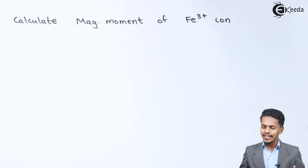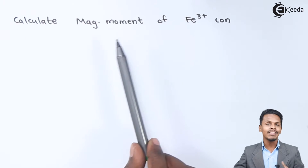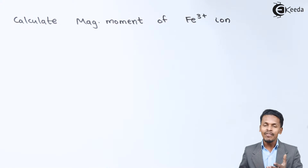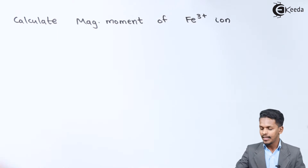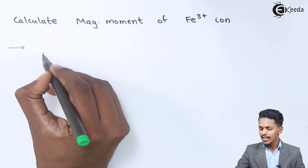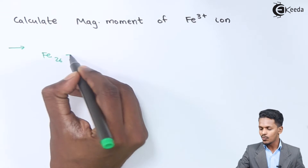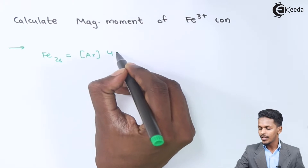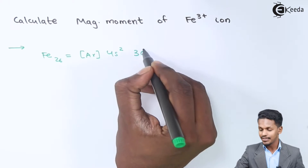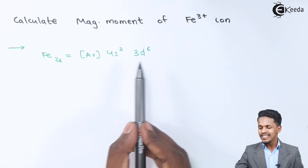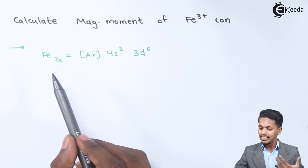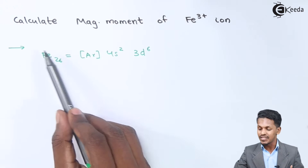Here we have a question: we have to calculate the effective magnetic moment of the Fe³⁺ ion. For that we should understand how to write the electronic configuration for Fe. The Fe atom has an atomic number of 26, and we can write the electronic configuration as: [Ar] 4s² 3d⁶. But this is the electronic configuration for Fe as an atom, not as an ion.